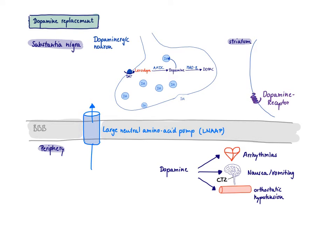The first idea would be if I want to replace dopamine, I just give dopamine. However, the problem is dopamine could not pass the blood-brain barrier because there is no transporter that would get dopamine from the periphery into the brain. We need dopamine in the brain because we lost these dopaminergic neurons in the nigrostriatal pathway. If I would give a patient just dopamine, it would not get into the brain. It would just stay in the periphery.